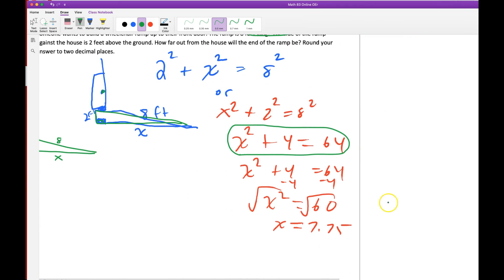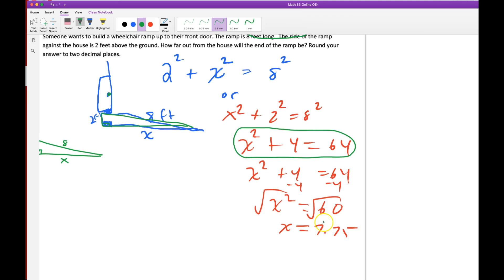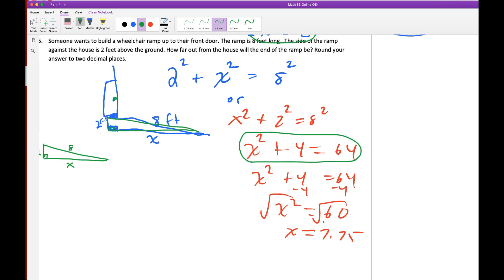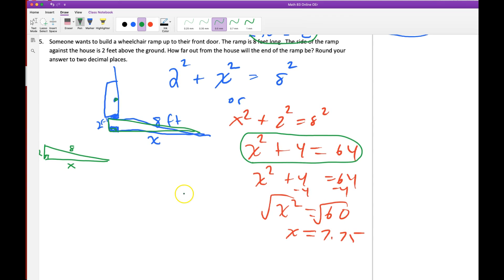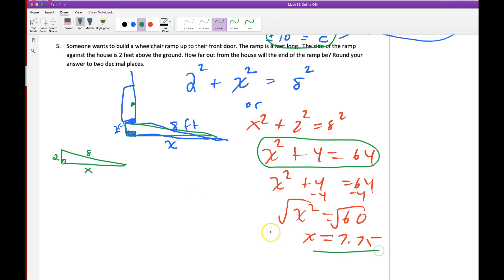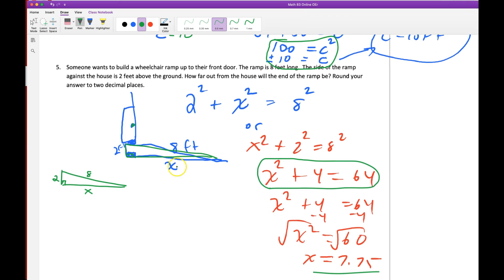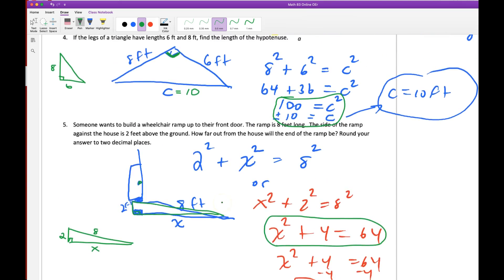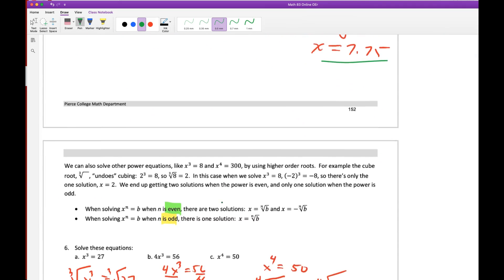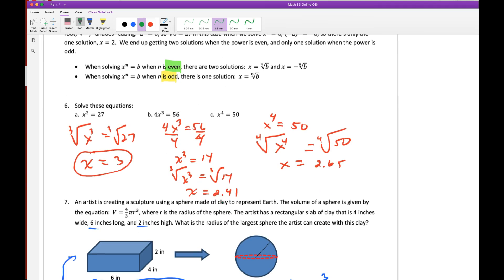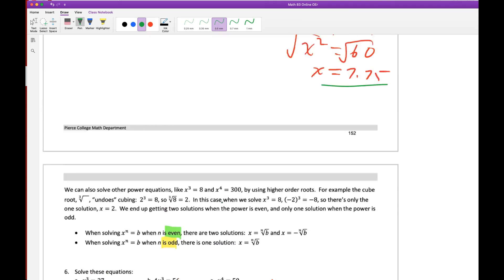And then you go ahead and solve it here. And you end up with the square root of 60. Again, it's plus or minus. But since we're talking about distances, we just keep the positive part. So this distance here would be 7.75. And then the last piece here we need to pay attention to. So that's Pythagorean Theorem.